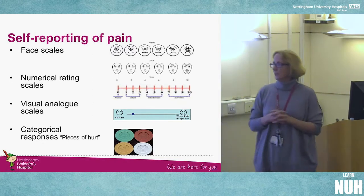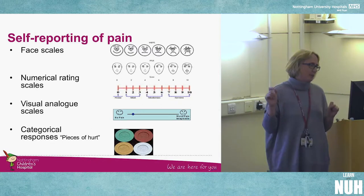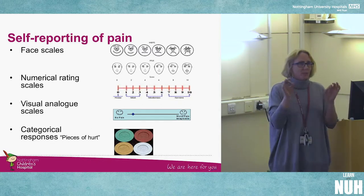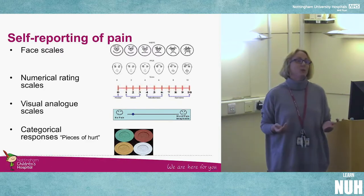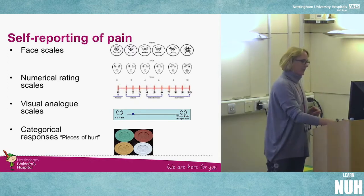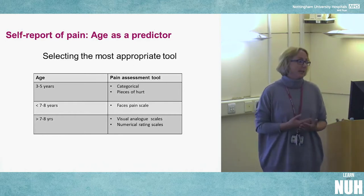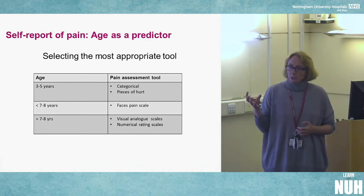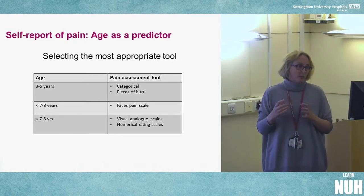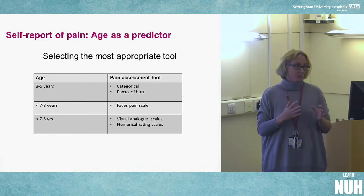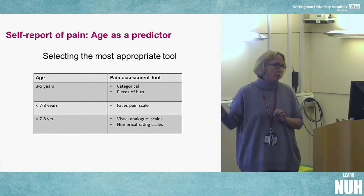In young verbal children we can use categorical 'pieces of hurt' — poker chips or connect ball chips — asking 'these are four pieces of pain, how many pieces of pain have you got?' To decide which tool to use for which child, we come back to the age: pieces of hurt for very young verbal children, smiley faces for under sevens, and visual analog scores or numerical rating scores from around seven or eight years old.